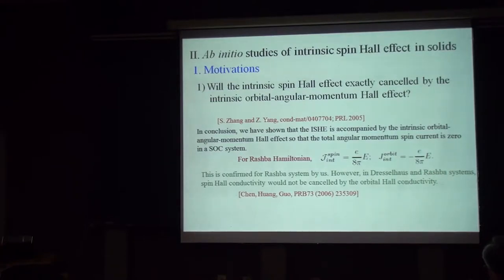But in the meantime, about one year later, a group in Oak Ridge National Lab pointed out that with a spin angular momentum current, you also have an orbital angular momentum current. But interestingly, the conductivity would be the same as spin Hall conductivity, but with the opposite sign.